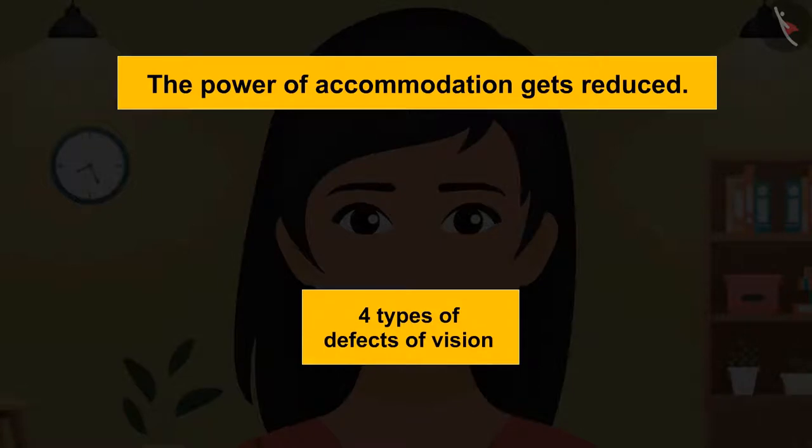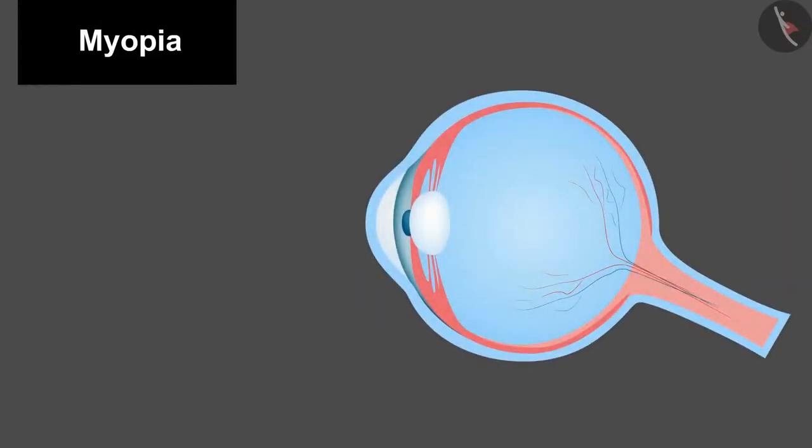The first one is myopia, which is also known as near-sightedness. A person having myopia is able to see nearby objects but finds it difficult to see distant objects clearly. In this, the image of the object forms not on the retina but in front of it.